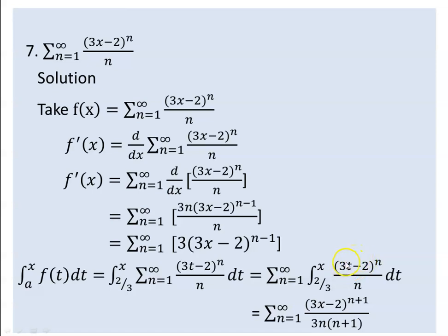Using the anti-process, we divide by the new power n+1, and also by three (the coefficient of x inside the expression). So we get (3x-2)^(n+1) divided by three times n times (n+1), evaluated. When we plug in t = 2/3, we get (3·(2/3)-2) = 0, so those terms vanish.